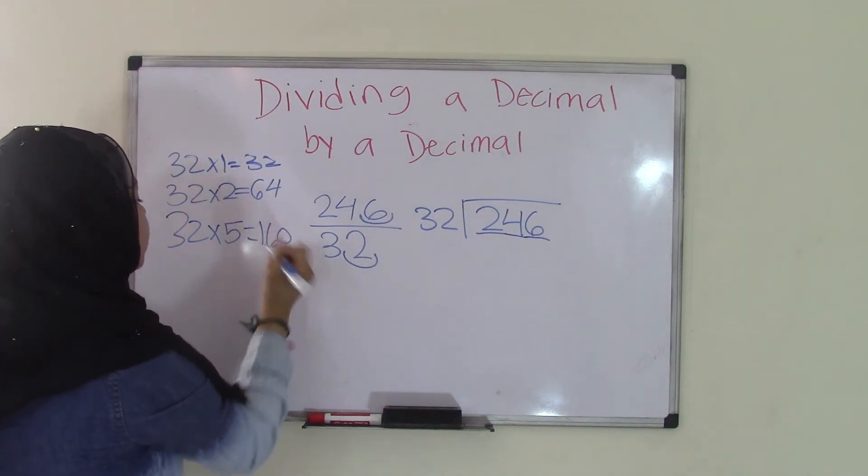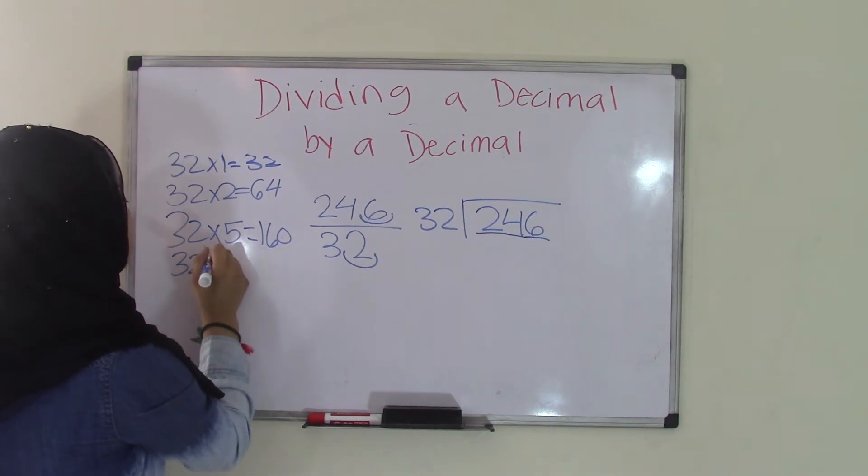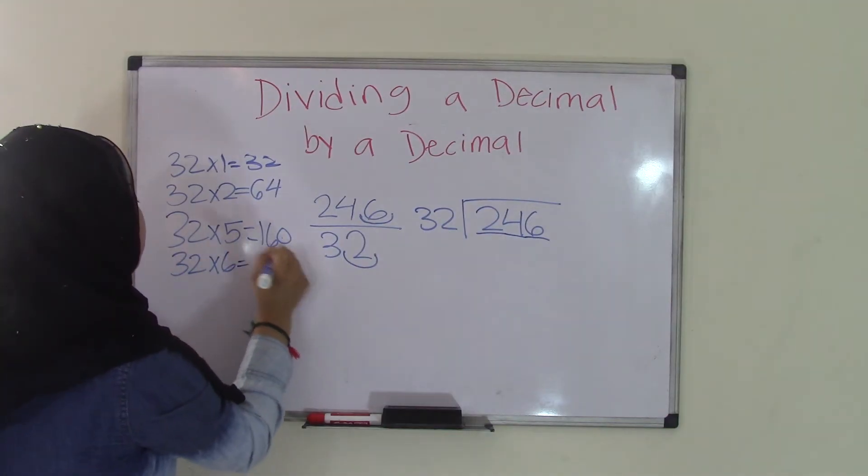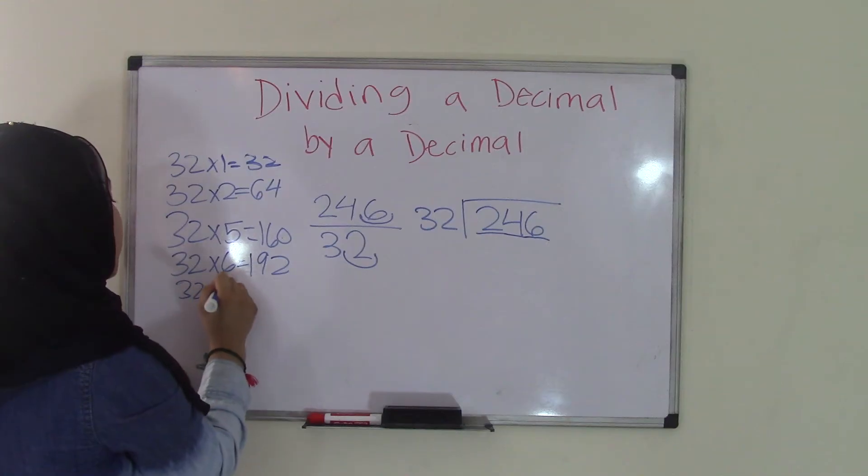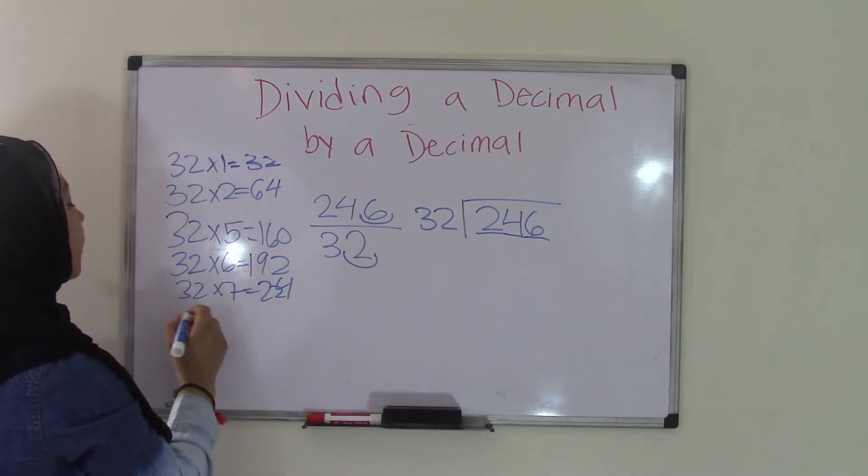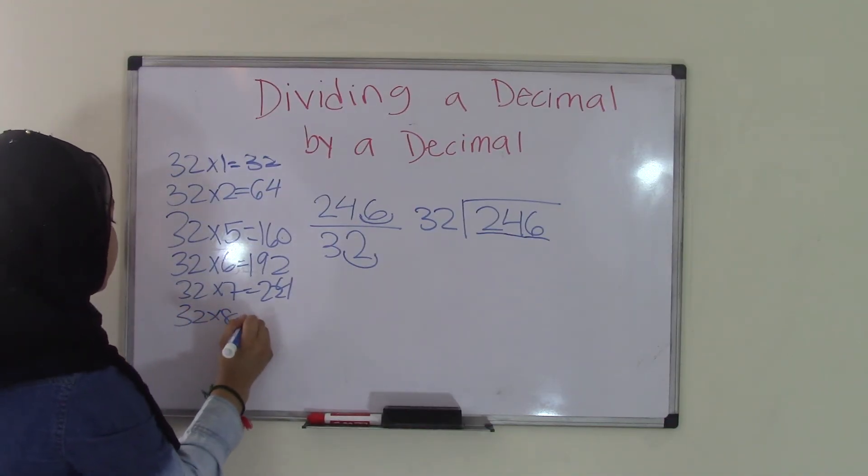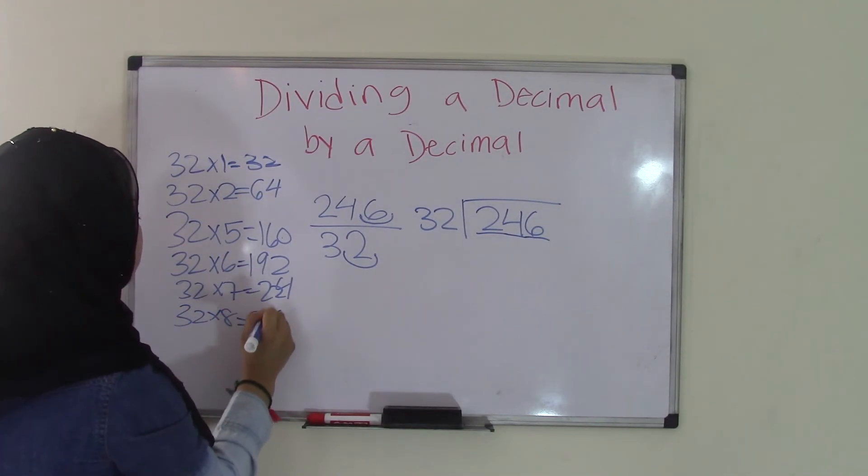So that equals 160. 32 times 6 equals 192. 32 times 7 equals 224. So as you can see, we're catching up now. 32 times 8 equals 256.